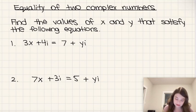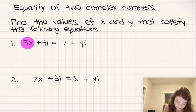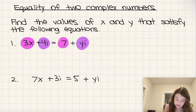So in other words, notice that here we have 3x which is our real part of the left, and then 7 is the real part of our right. And then the imaginary part of our left is 4i and the imaginary part is yi.